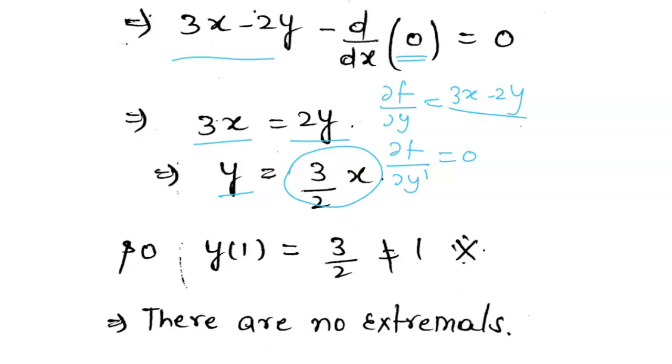But in the question, the boundary conditions given are y(1) equals 1. Let me check if the other condition is also satisfied. If we apply y(1) equals 3/2, then at x equals 1 we get 3/2, but in the question it's given that y at 1 equals 1. So here we have a contradiction. So if there is a contradiction, it means we cannot find an extremal.